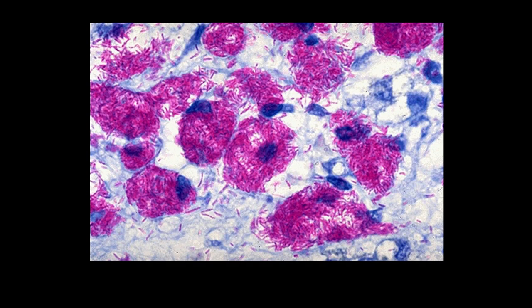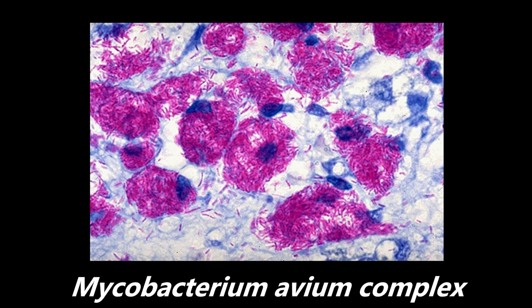This is another example of some microscopy. This is Mycobacterium avium complex. This is an acid-fast stain showing mycobacterium within macrophages all over the place. Remember, this is one of those very common immunocompromised, AIDS-defining illnesses. You want to be able to identify this in a patient, and you want to also be able to identify it on histology slides.